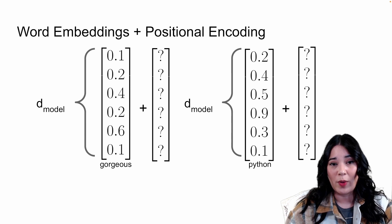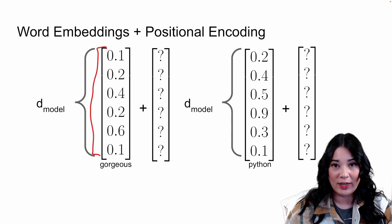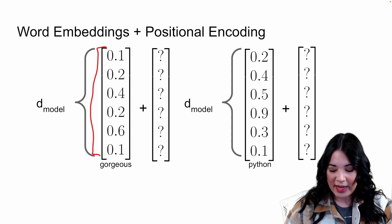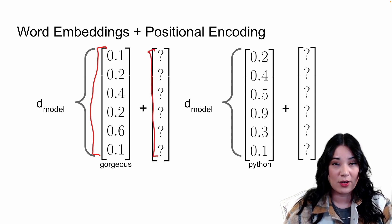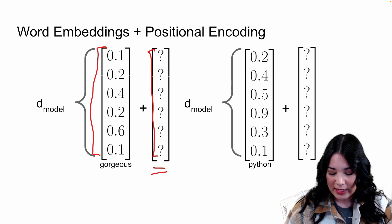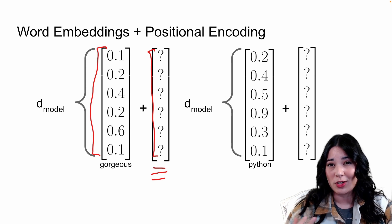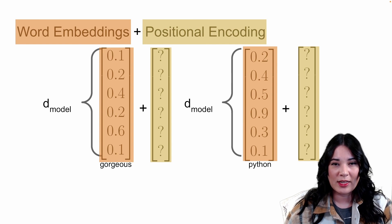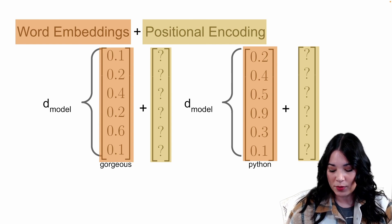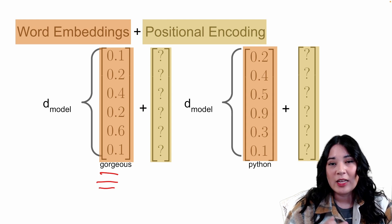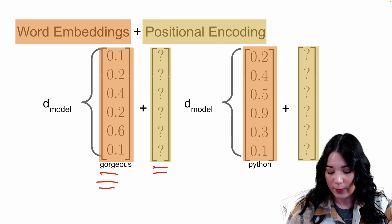Positional encoding is a way to take our word embeddings and inject information about where in a sequence a word occurs. We do that by taking a vector that is the same dimensions as our embedding vector and adding it to our embedding vector, basically injecting positional information. When we're done, we have an embedding that captures both the semantic meaning of the word and its positional information.